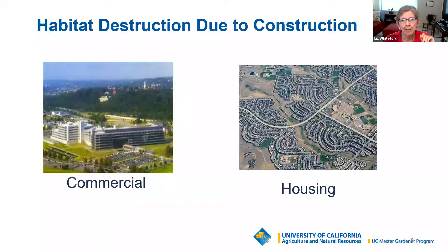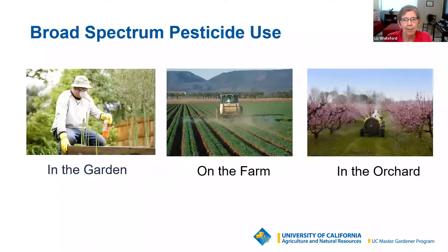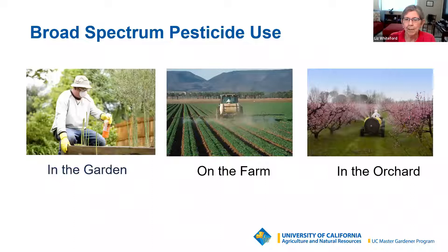Broad spectrum pesticide use in the garden, on the farm, and in the orchard is another factor. As master gardeners, our goal is to avoid pesticide use if we can. If we have to use a pesticide, we try to use the least toxic, most specific pesticide with the greatest effect.